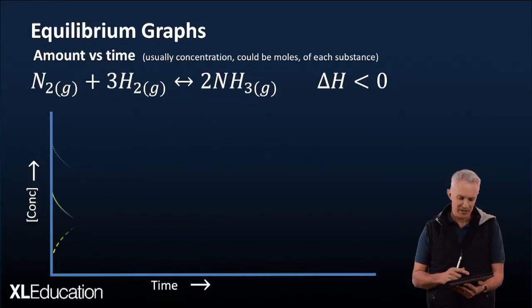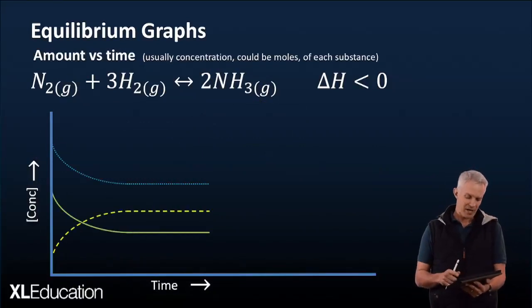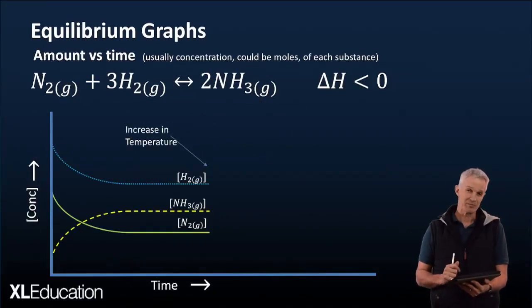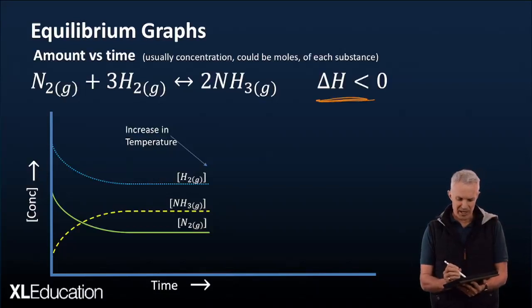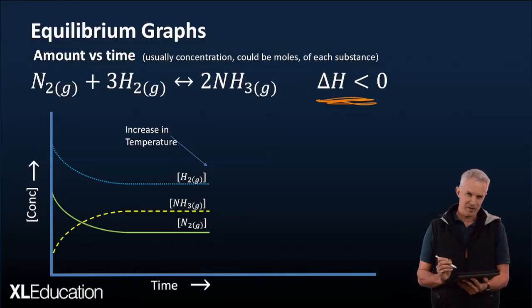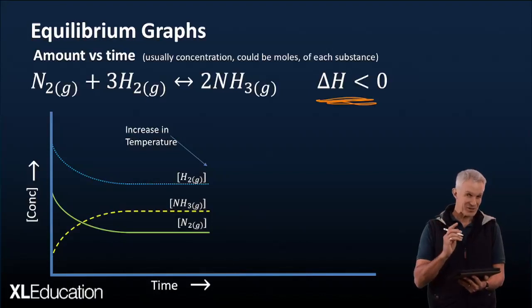First of all, a concentration graph. This time, we're going to have a change in temperature, an increase in temperature. So, as you can see, the ΔH is negative. Therefore, that means that the forward reaction, if the ΔH is negative, the forward reaction is exothermic.